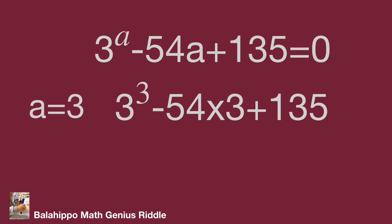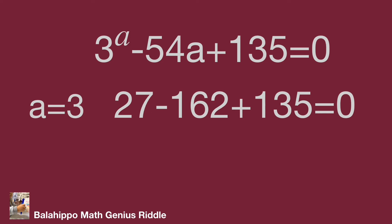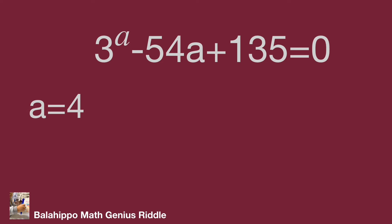When a equals 4, 3 power 4 minus 54 times 4 plus 135 equals 81 minus 216 plus 135 equals 0.